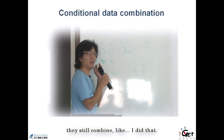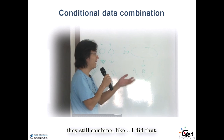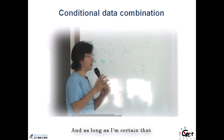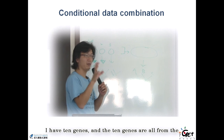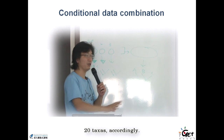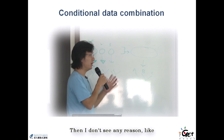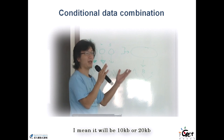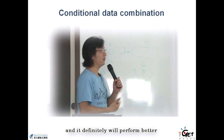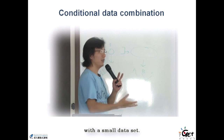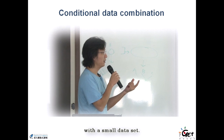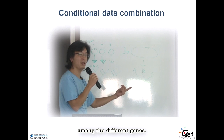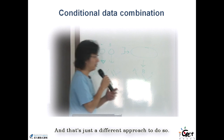Many people, even after doing the compatibility test, still combine the data. Like me — I do the test just to know the data, but as long as I'm certain I have 10 genes all from the same 20 taxa accordingly, I don't see any reason not to combine the 10 genes. That would be 10 or 20 KB of data, and it will definitely perform better than a small dataset. So I combine anyway, but I still check for conflicting signal among the different genes.